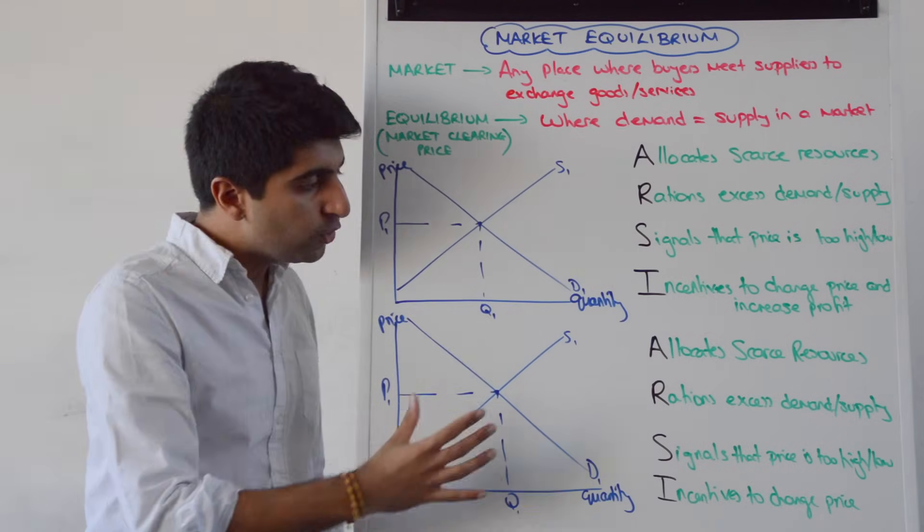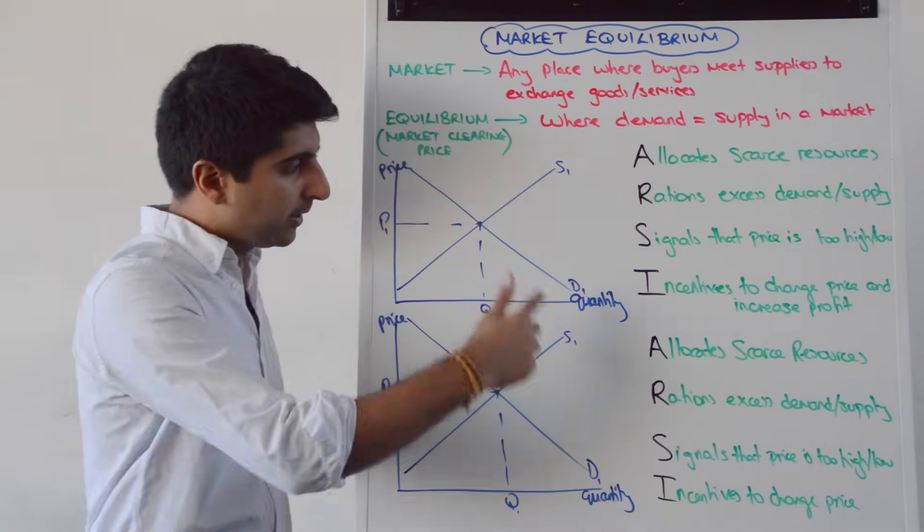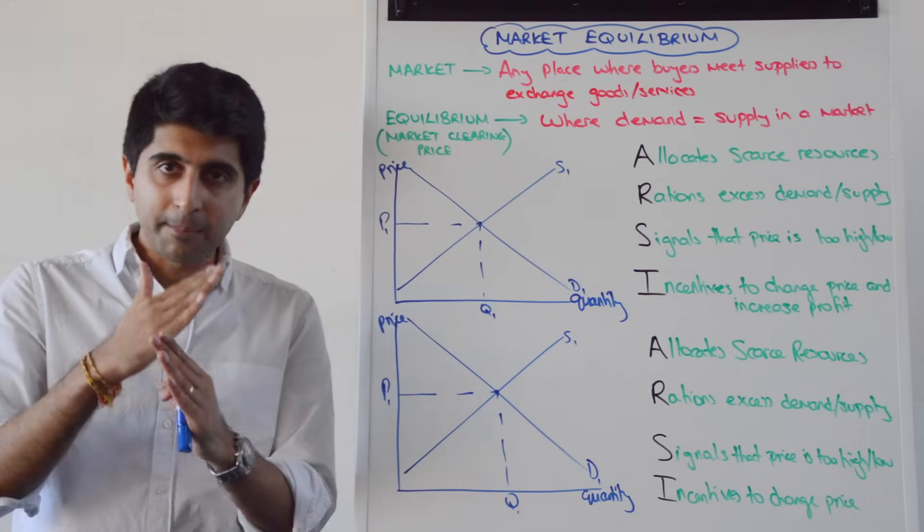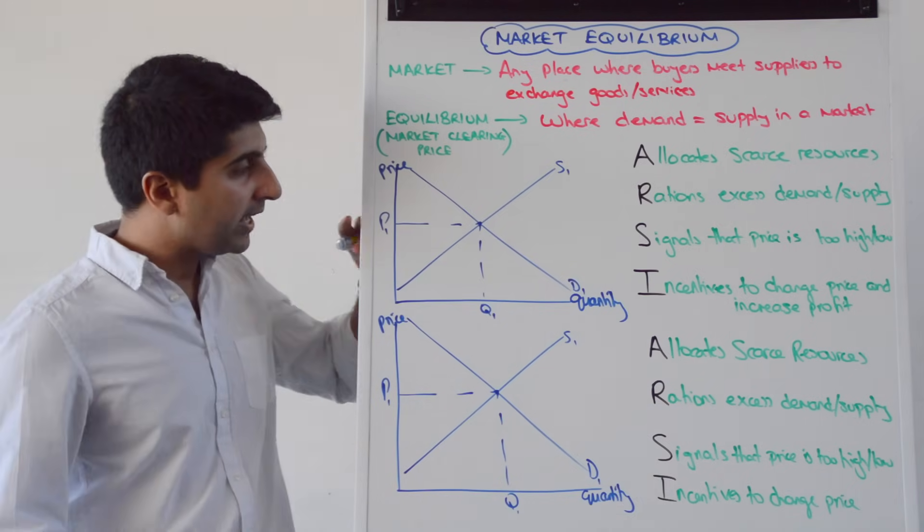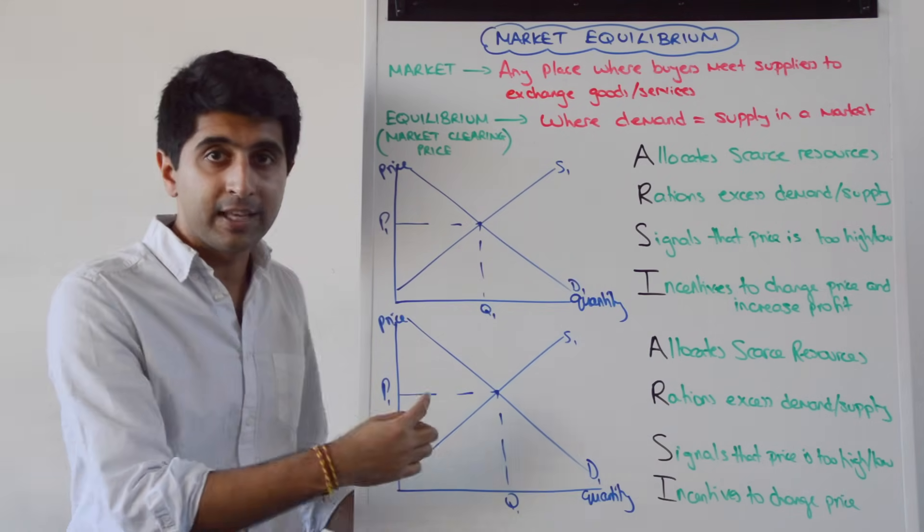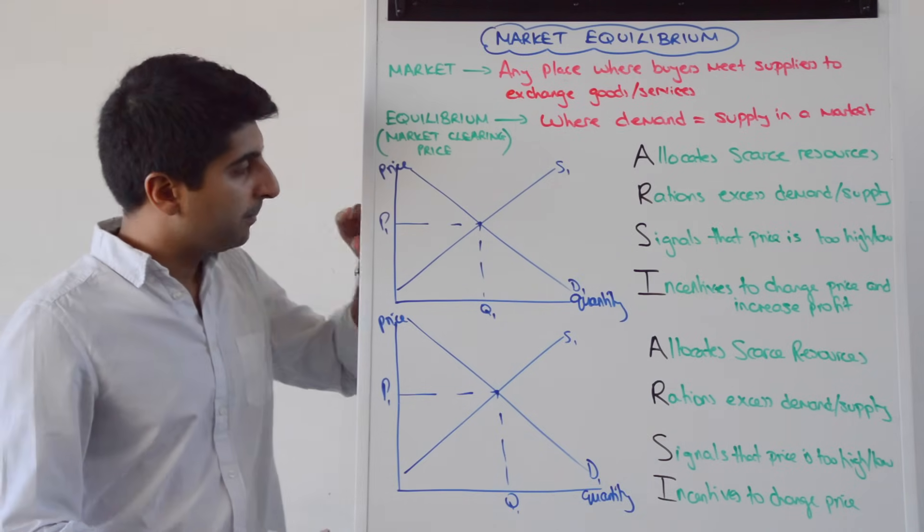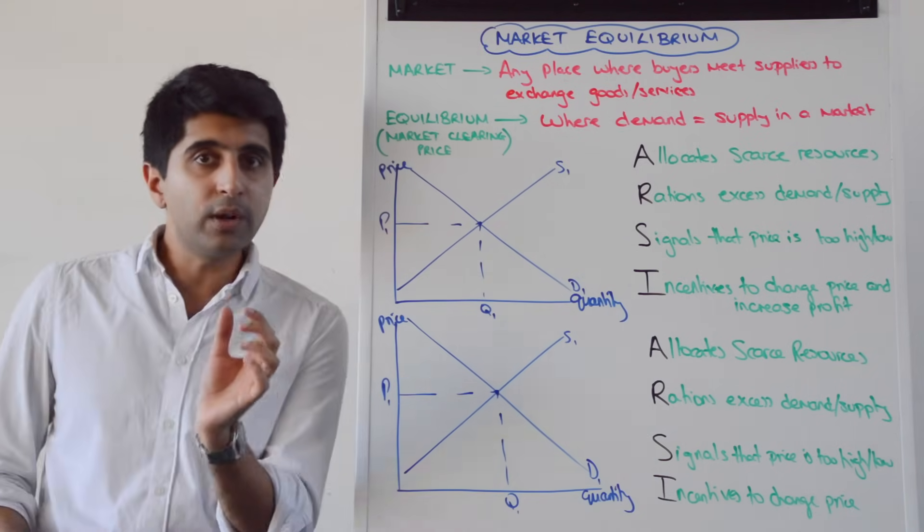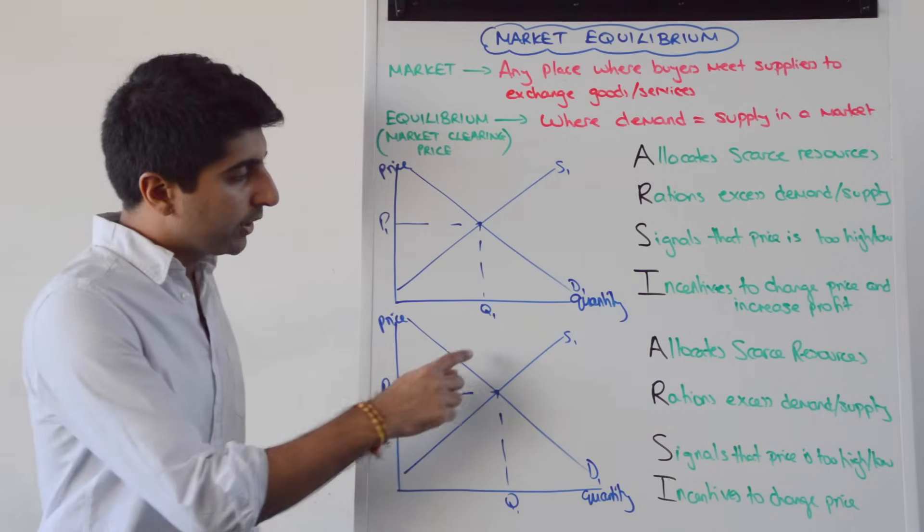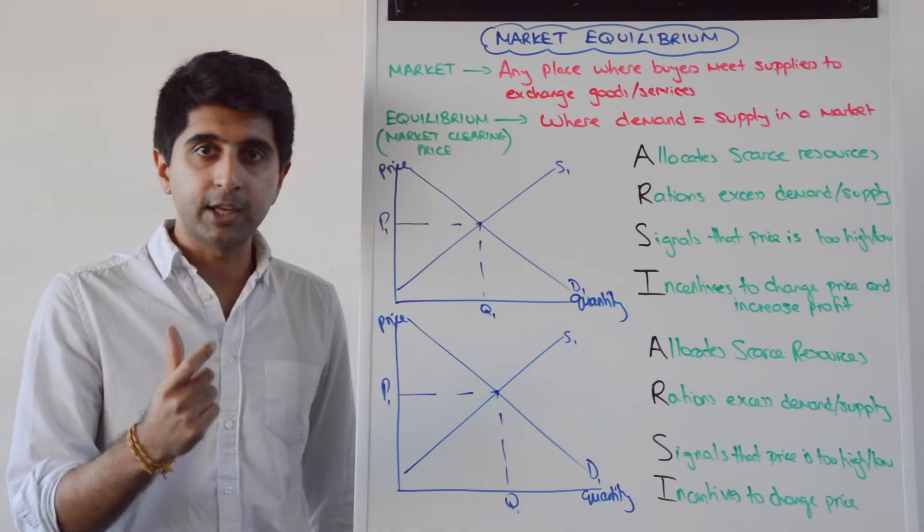As you can see, I've drawn two diagrams here. I've drawn supply and demand. Where the two cross, so where demand equals supply, that's where I've taken the price and the quantity in both cases. We can call P1 the equilibrium market price. We can call Q1 the equilibrium market quantity.